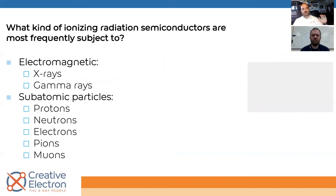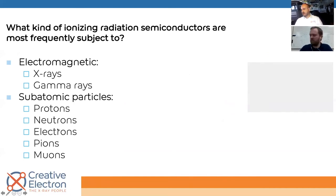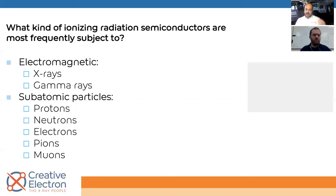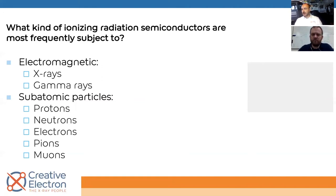So electromagnetic radiation covers x-rays and gamma rays, while particles include protons, neutrons, electrons, pions, muons, and a whole soup of different types. For the most part, damage happens with particles because particles have mass — when you jam them against your component they're going to damage something. At Fermilab our main concern was protons, antiprotons, and the soup of sub-particles that came from those collisions. Electromagnetic radiation is fairly docile to electronics.